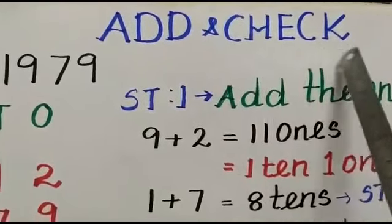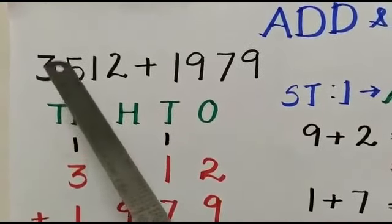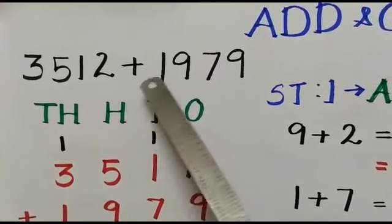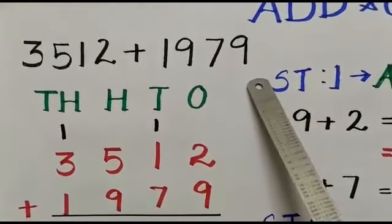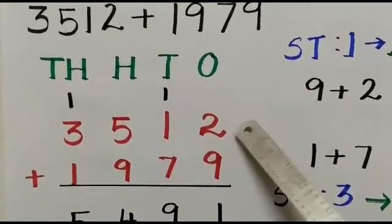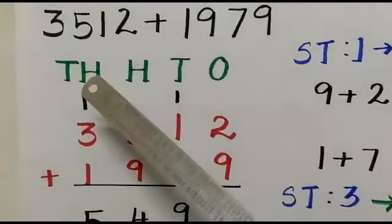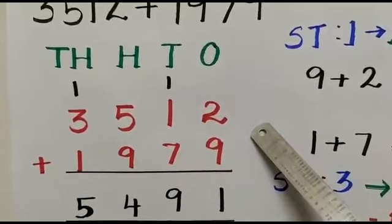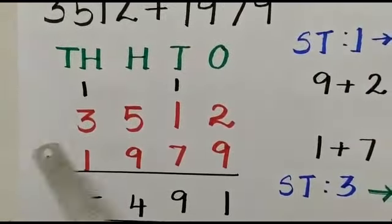Add and check. The problem is 3,512 plus 1,979. First write the numbers one below the other in the correct place value columns. First start with ones and move towards your left.